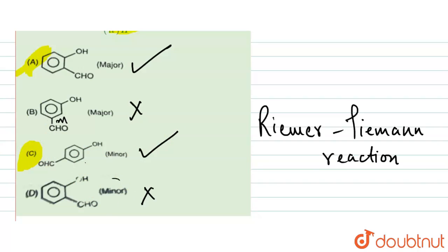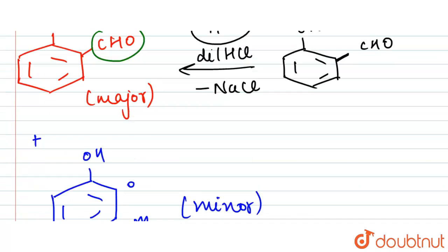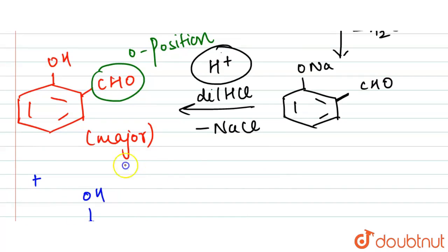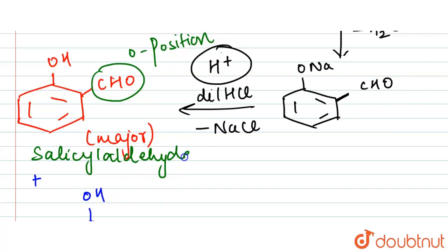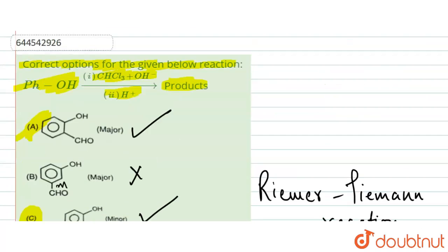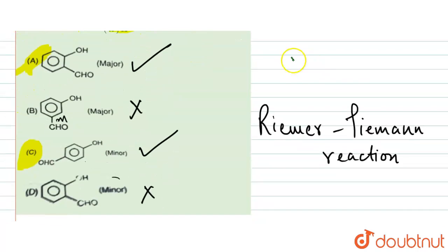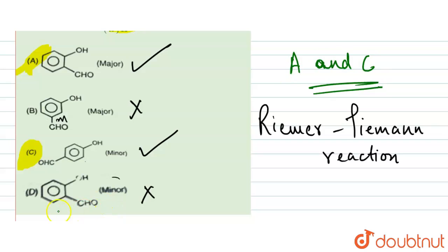The Reimer-Tiemann reaction is used for the formation of salicylaldehyde. This is our major product — salicylaldehyde. So our final answer is option A and C.